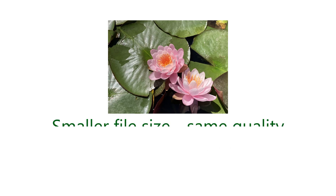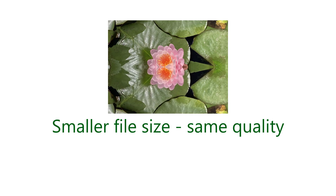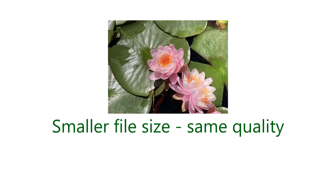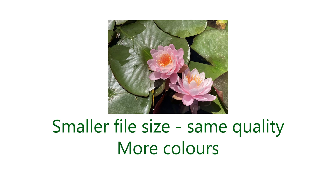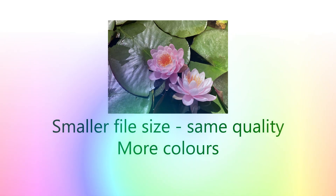Firstly, it's more efficient. HEIF files are often half the size of the equivalent JPEG, and yet they have the same, or even better, image quality. They can also be more colourful. JPEGs can contain up to 16.7 million colours, while HEIF theoretically supports 281 trillion.